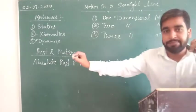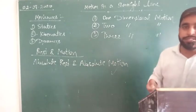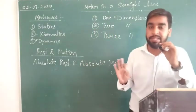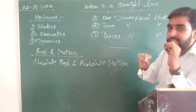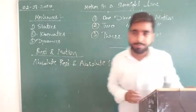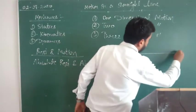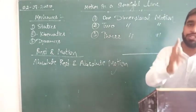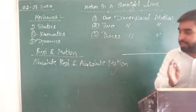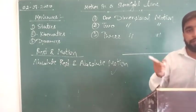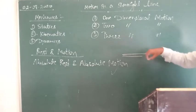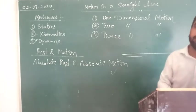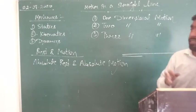Students sometimes get confused thinking only the x-axis should be used, but it could be any axis. Suppose an object is moving in a straight line — only one axis is required to define the position of the object at any instant of time. Such kind of motion, in which only one axis is enough to describe the position of the object, is called one-dimensional motion.